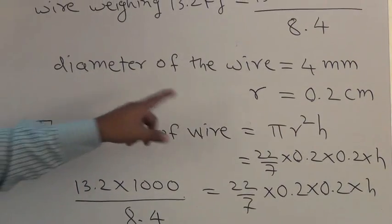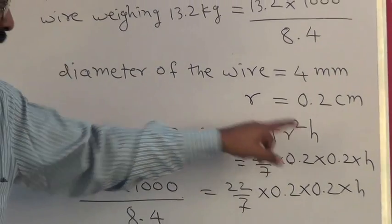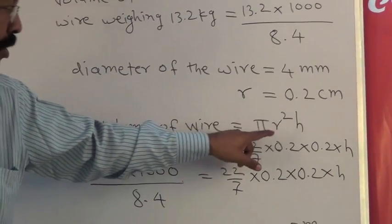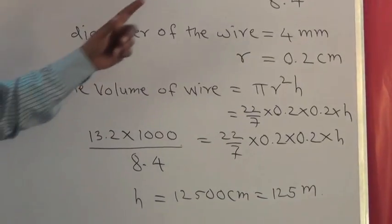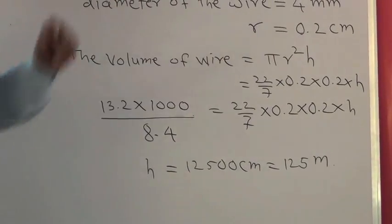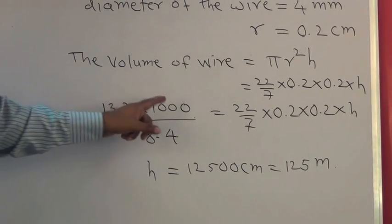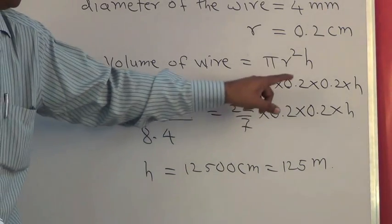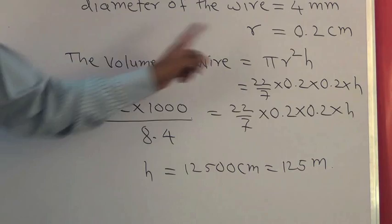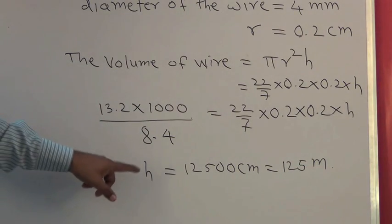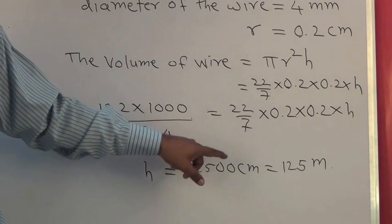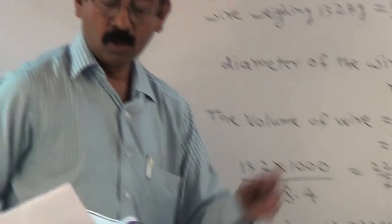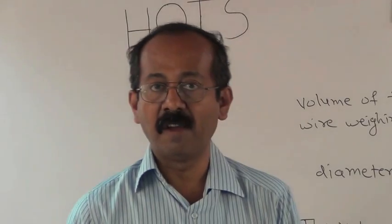The volume of the wire is given by πr²h. Substituting the values, (22/7) × 0.2 × 0.2 × h. Now equating these two, we get (13.2 × 1000)/8.4 = (22/7) × 0.2 × 0.2 × h. After simplifying this, we get value of h = 12500 centimeter. Dividing this by 1000, 125 meters. So length of the wire is 125 meters.